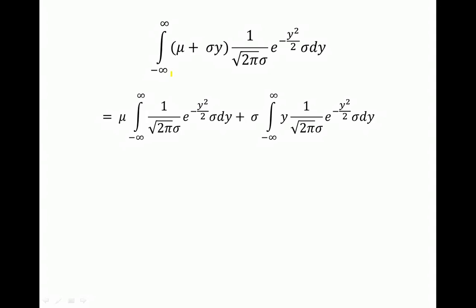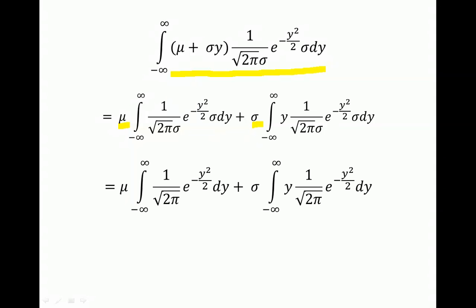The transformed integral can be broken into two parts since we have a sum. Constants like μ and σ can be factored outside their respective integrals. The sigma factors cancel out, and what remains inside each integral is the probability density function of a standard normal random variable.